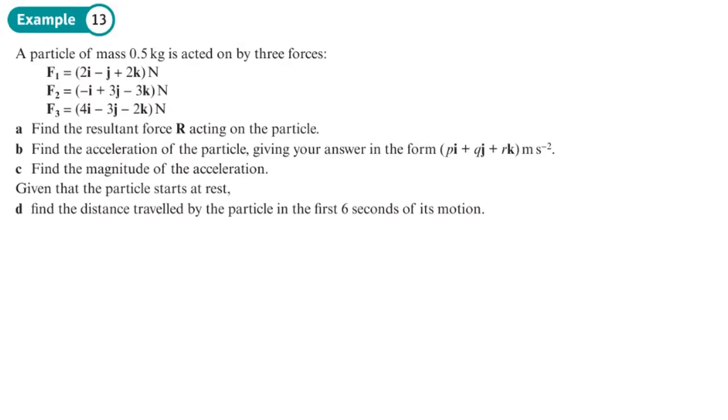Okay, just one example. So part a is find the resultant, that means find the sum of the forces. Resultant just means the sum of what you get. I would probably find it easier if they were in a column, I'm going to write it in a column anyway to add them together.